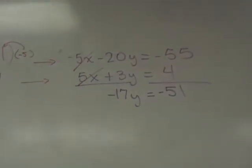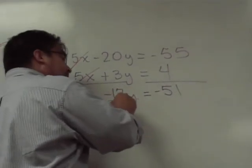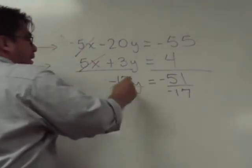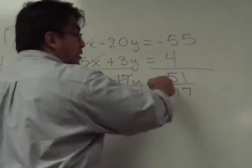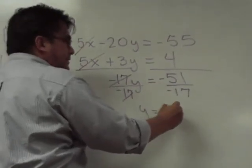And now, we divide both sides by negative seventeen. And we get y is equal to? Negative three. You have a negative divided by a negative? Positive. Positive three. Very nice.